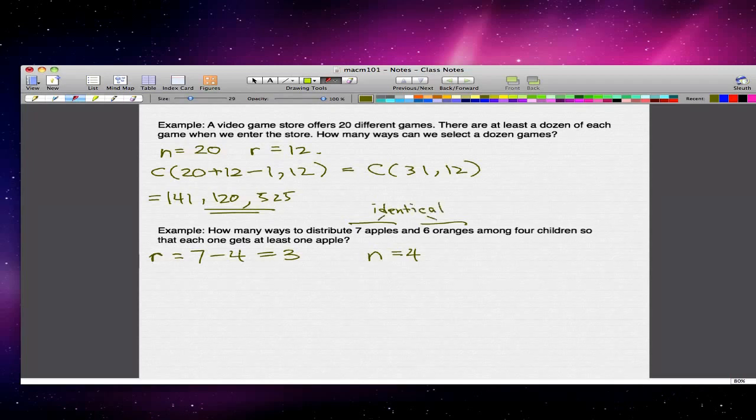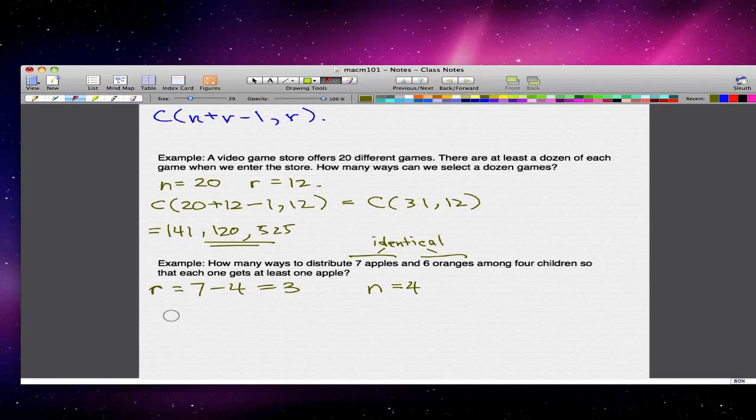These are identical. So what we have to do, we already found our n and r. So again, we just use the formula that we had in the beginning to find the different ways to get the apples. So we use C(4+3-1, 3), and that will give us 20 ways to distribute our apples.